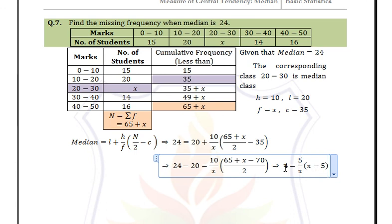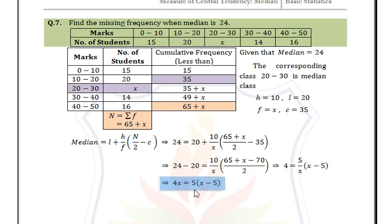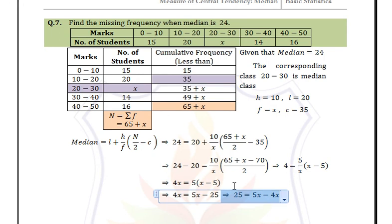Multiply both sides by X: 4X = 5(X − 5) = 5X − 25. Therefore 25 = 5X − 4X, giving X = 25. The missing frequency is 25.